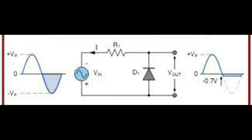During the negative half cycle of the input waveform, the diode D is reversed biased which causes the positive half cycle to be clipped off.